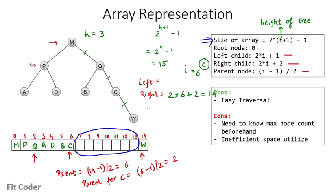The second disadvantage is inefficient space utilization. As we saw, several nodes in the array were empty. For a large sparse tree, a lot of space would be unutilized. This form of representation is good for a perfect binary tree or a complete binary tree, but for other types there will be a lot of empty space, making it not a suitable choice.